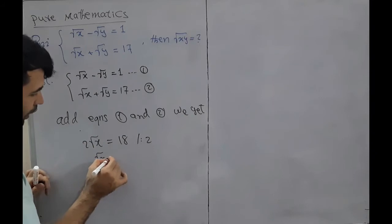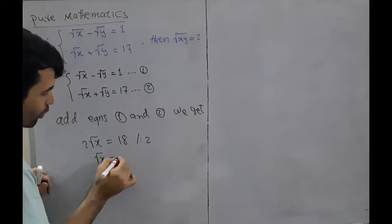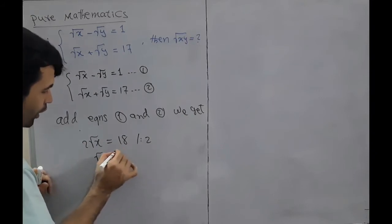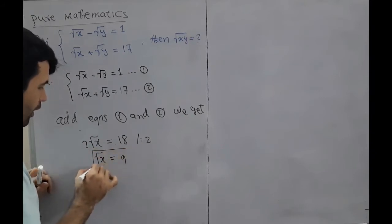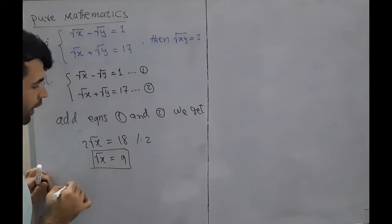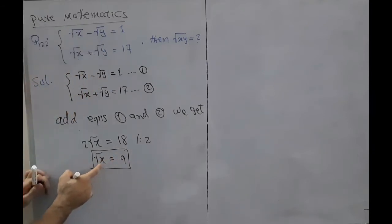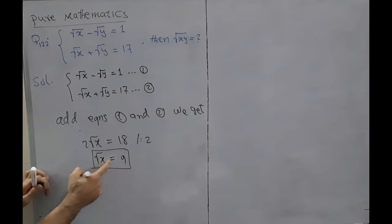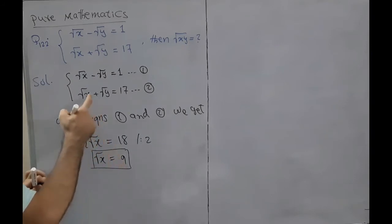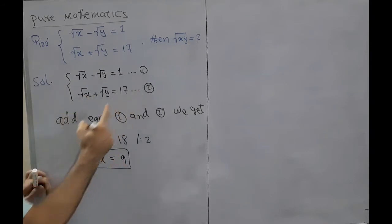Square root of x equals 18 divided by 2, which equals 9. This is the value of square root of x. We now substitute this value into equation 1 or equation 2.